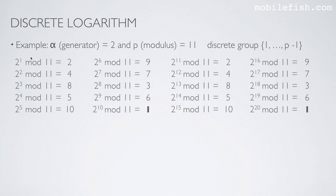So here's an example, alpha is 2, p is 11, and the discrete group is 1 till p minus 1. Here's the base 2, the modulus 11, and we increase the exponent sequentially: 1, 2, 3, 4, 5, 6, 7, etc. If you calculate this equation, you will get these values. And then you will notice something.